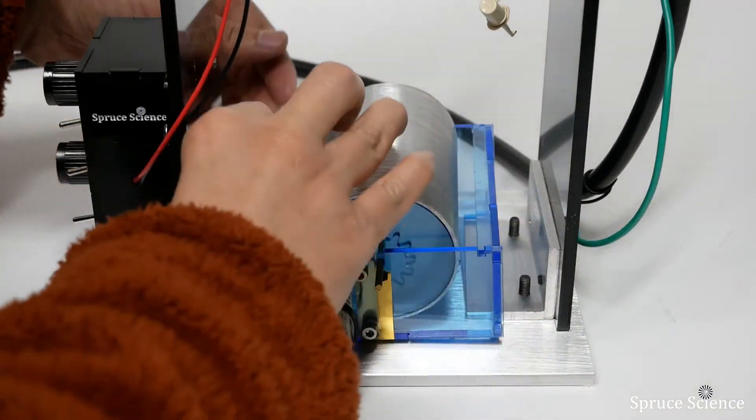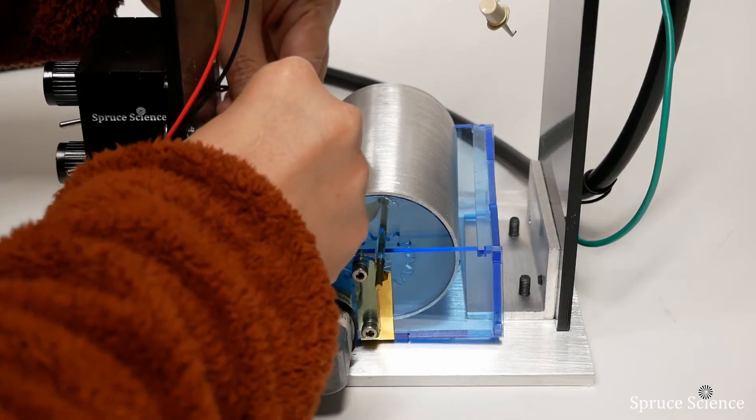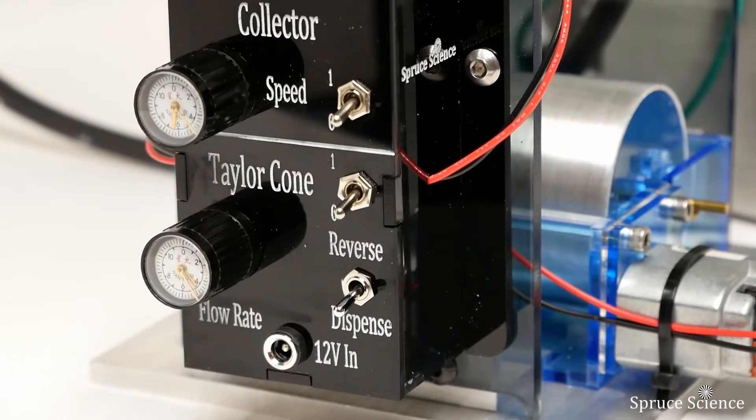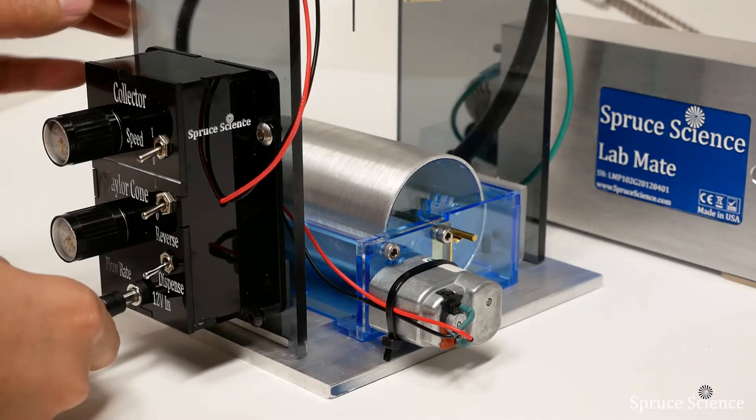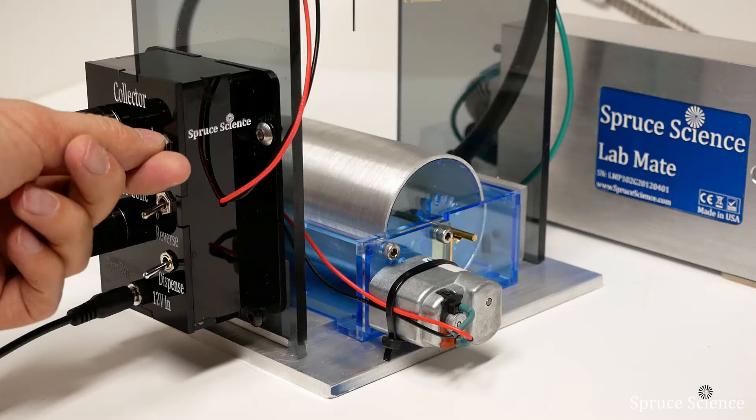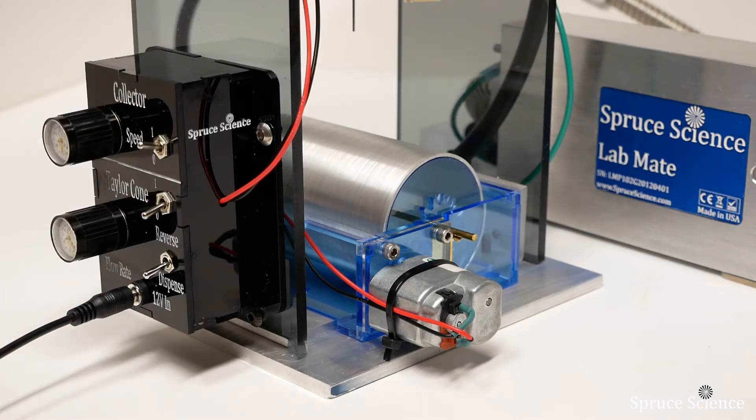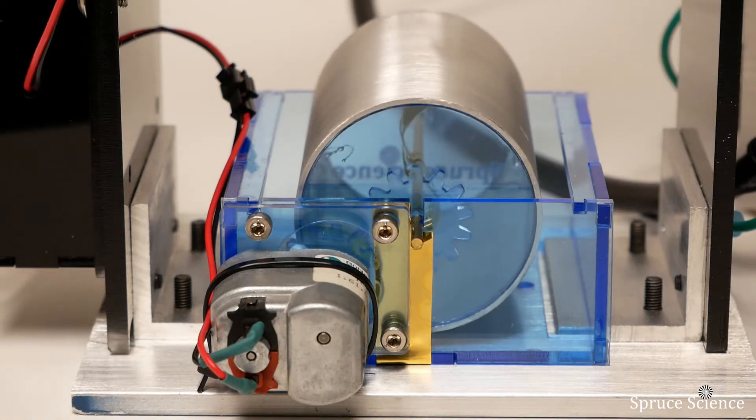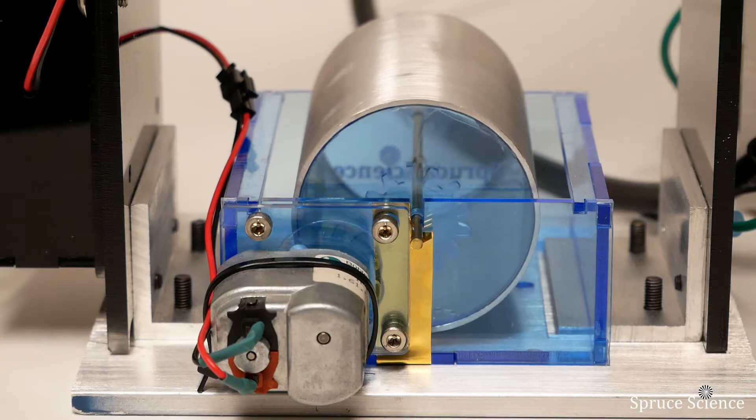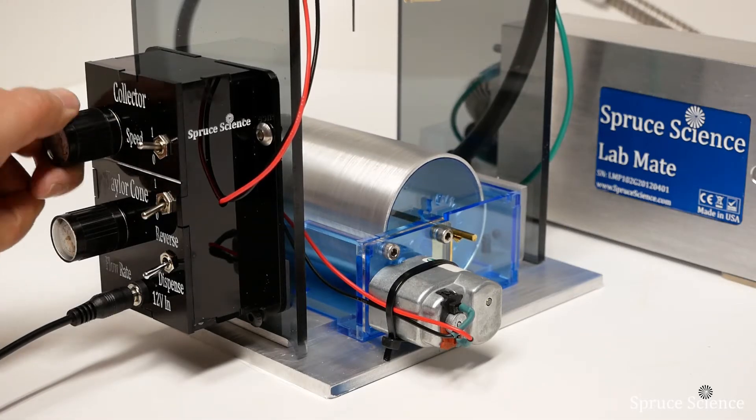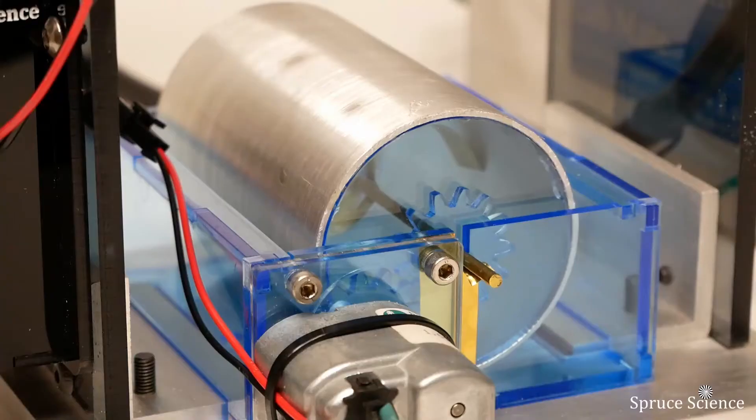Connect the DC motor to the controller. Plug in 12 volts and provide power to the control panel. Turn on the collector motor. The collector rotation speed can be adjusted by turning the dial on the control panel.